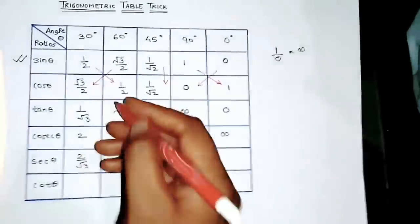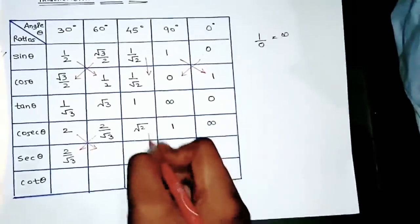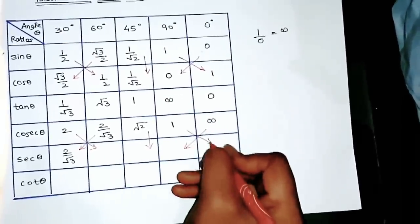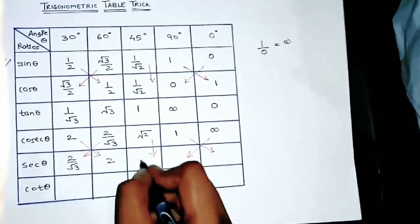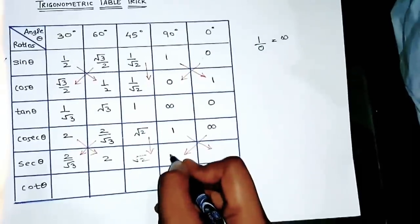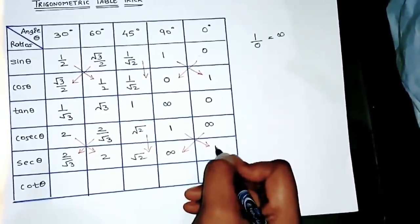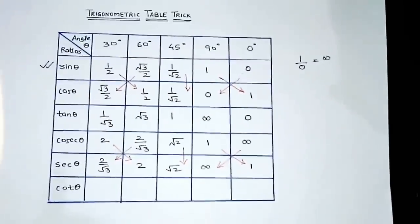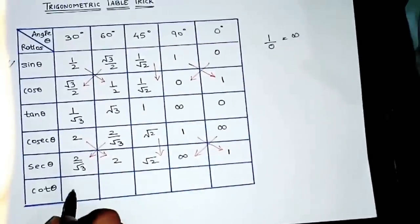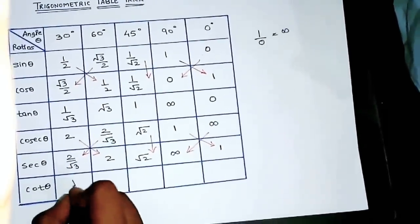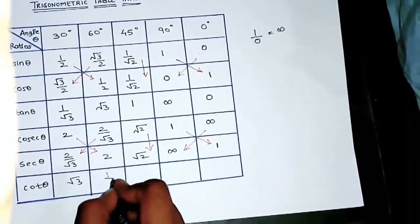Now for sec, it will be reverse of cosine. Okay, so 2/√3. And now you need not look here. What I told you, cross section? This thing cross? You can do the same pattern, cross pattern. So just write it down here, it will be okay.